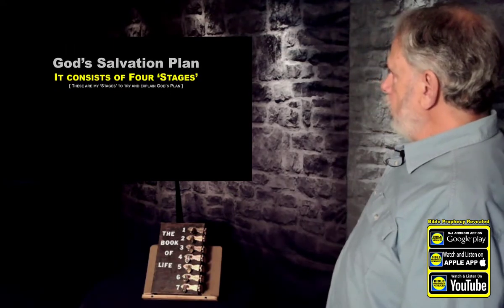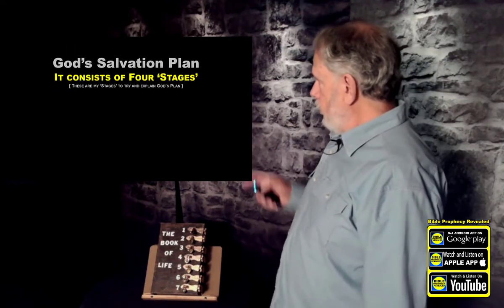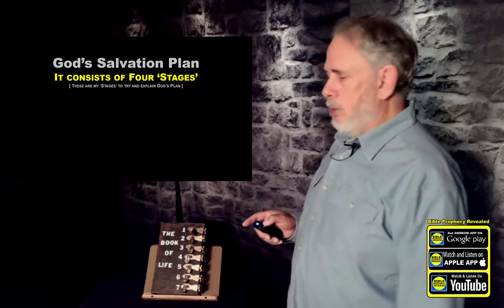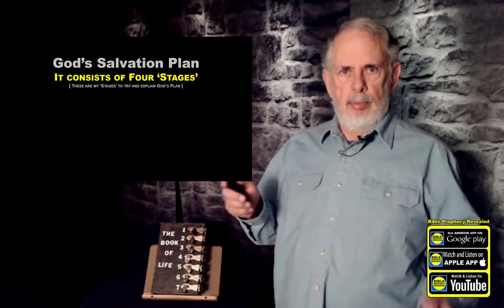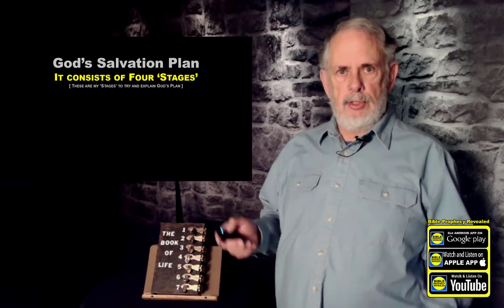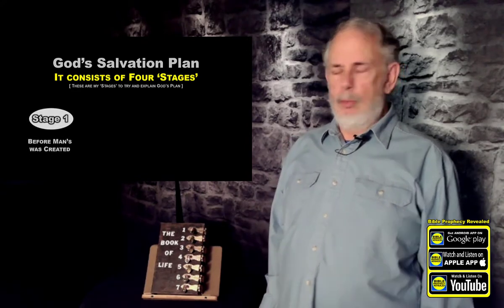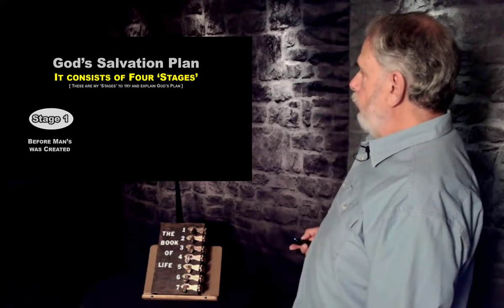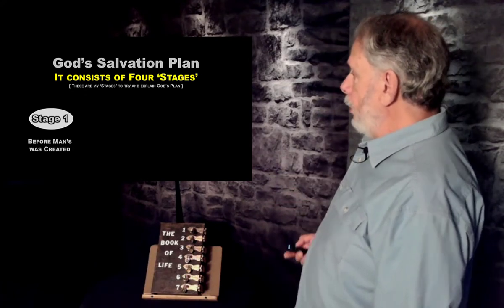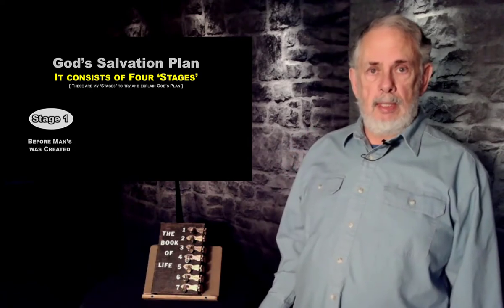God's salvation plan consists of four stages. This is my separation of the story — I've broken it into four stages so we can go through it one by one. Stage 1 I'm calling 'Before Man Was Created' — what went on before man was created in terms of the salvation plan.